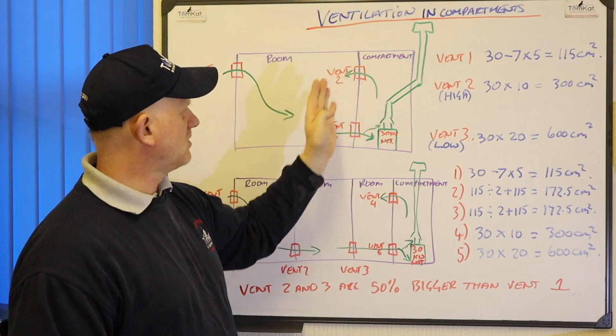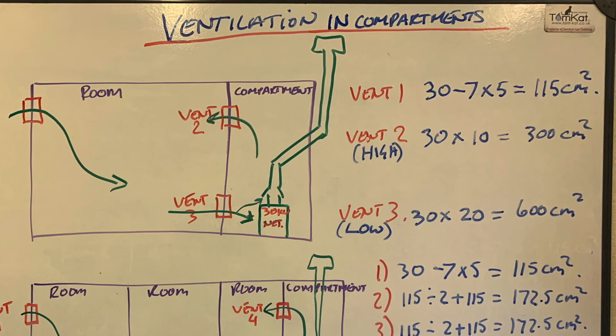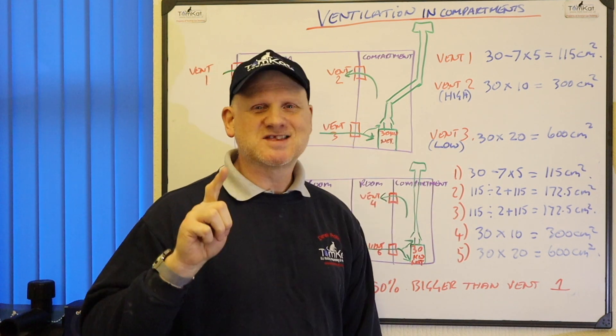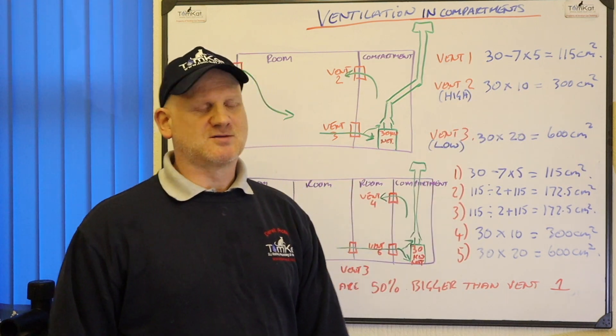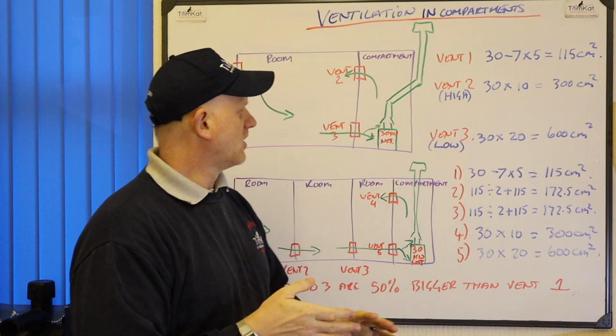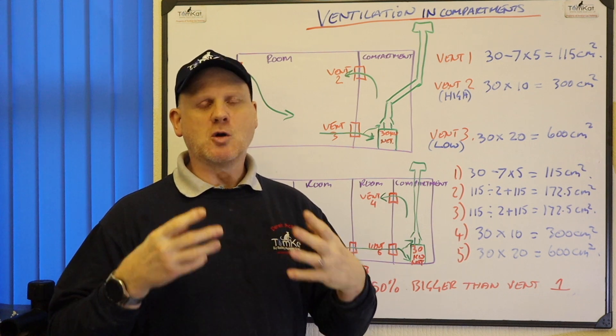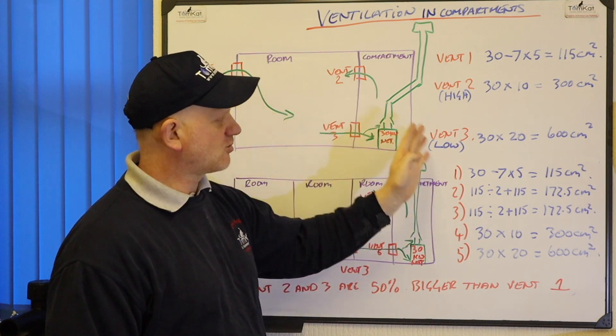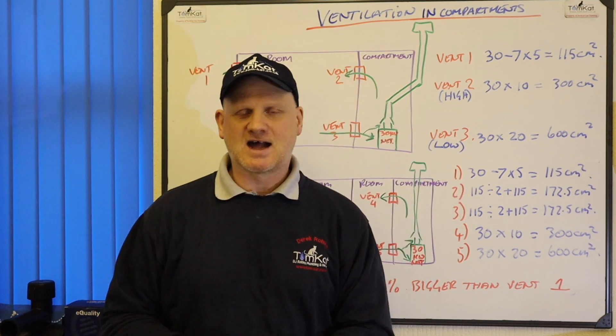When it comes to vents 2 and 3, so vent 2 is a high level vent, remember we don't minus the 7 and this figure is already a net figure so we don't need to divide by 1.11. So vent 2 is 30 times 10 which is 300cm² and the bottom one is 30 times 20 which is 600cm². So there, a couple of big holes. So that's in a nutshell ventilation for an open flue boiler in a compartment. We need to times the kilowatts net by 20 for low level vent and 10 for the high level vent.